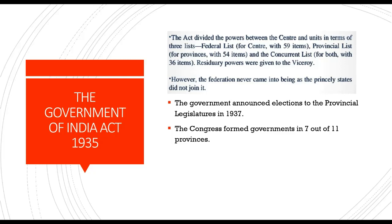The concurrent list includes subjects of common interest to both union and state governments; both center and state can make laws, but in case of conflict, laws by the central government prevail. Items like education, forest, marriage, trade unions, adoption, and succession all fall under the concurrent list. The residuary powers — items not under the union, state, or concurrent list — were exercised by the viceroy.